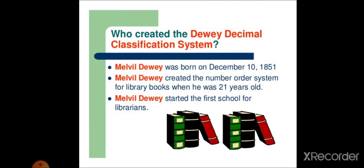Who created the Dewey Decimal Classification System? It was Melville Dewey, as I discussed with you. He was born on December 10, 1851, and Melville Dewey created the number order system for library books when he was 21 years old. Melville Dewey started the first school for librarians.